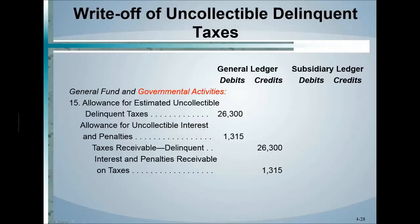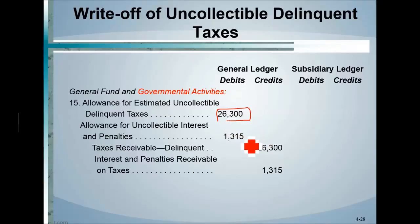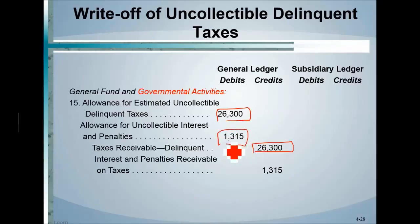When it becomes clear that certain taxes won't be collected — due to foreclosure, bankruptcy, or other reasons — the allowance previously set up is used to reduce the receivable. We still try to collect on it, so new receivables are set up accordingly. The same treatment applies to the allowance for uncollectible interest and penalties.